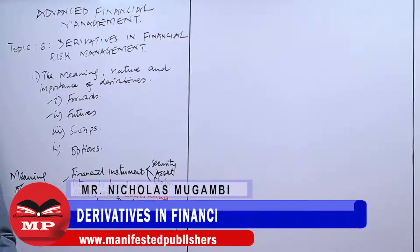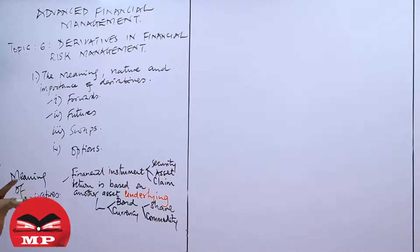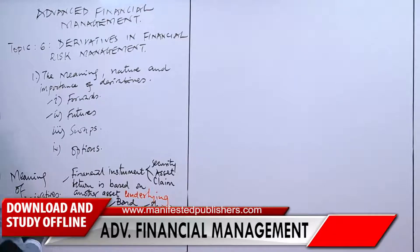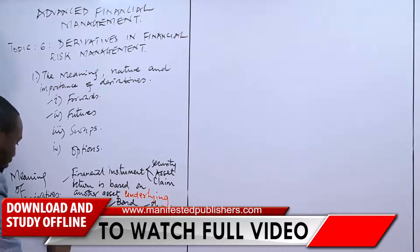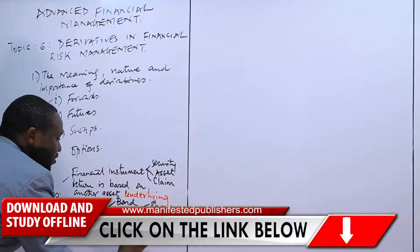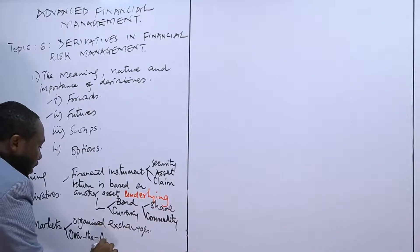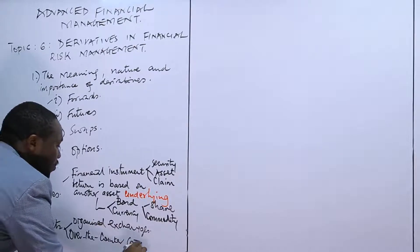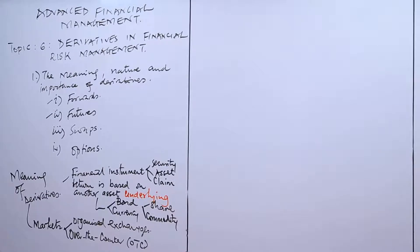Derivatives are contracts, and these contracts trade in financial markets. There are two types of markets where these contracts trade. The first market is what we call the organized exchanges, and the next type of market is what we call the over-the-counter, commonly referred to as OTC. Organized exchanges are the regulated security exchanges. Over-the-counter is where private agreements are signed.